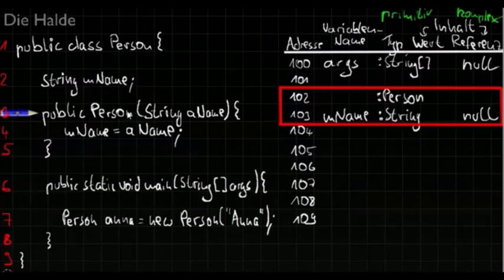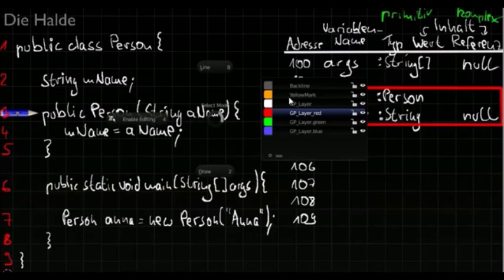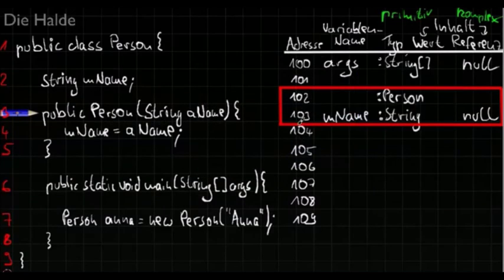This constructor has a similar behavior like a common method and it has one input value. And for every input variable of a method there appears a new memory cell in the memory. So let me keep one line empty. The variable aname has the type string.